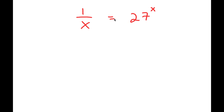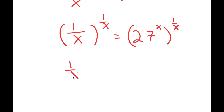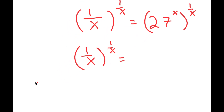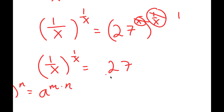To start this off, I'm going to first take the power of one over x on both sides. So now I get one over x to the power of one over x is equal to — if I have something in the form a to the power of m to the power of n, this is equal to a to the power of m times n. So x times one over x is simply just one, so I get 27 to the power of one, which is just 27.